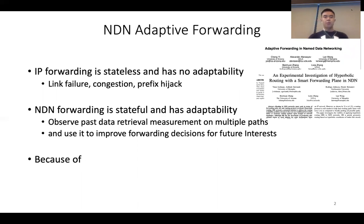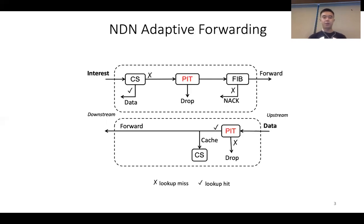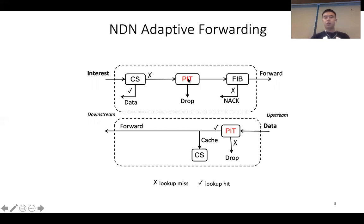The reason NDN's forwarding plane is adaptive is because NDN uses an interest-data exchange model and maintains states. More specifically, in the forwarding processing, the interest is maintained at the PIT table. After the data comes back, it also looks up the PIT table. With the PIT states, the forwarding plane is able to measure the round-trip time for an interest-data exchange and also collect other measurements.